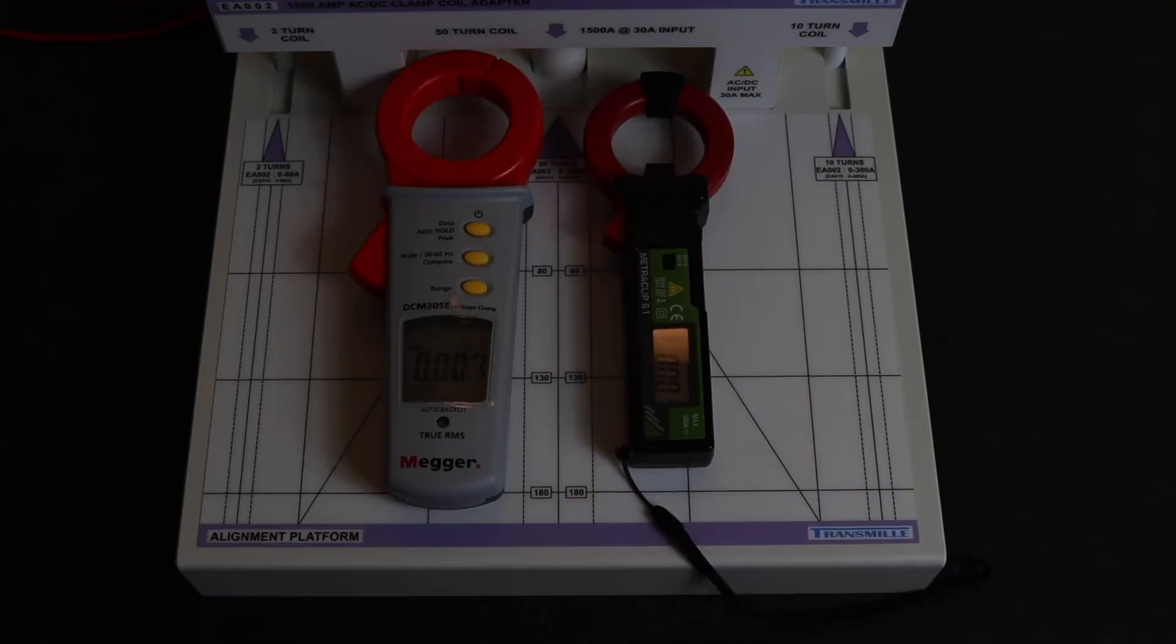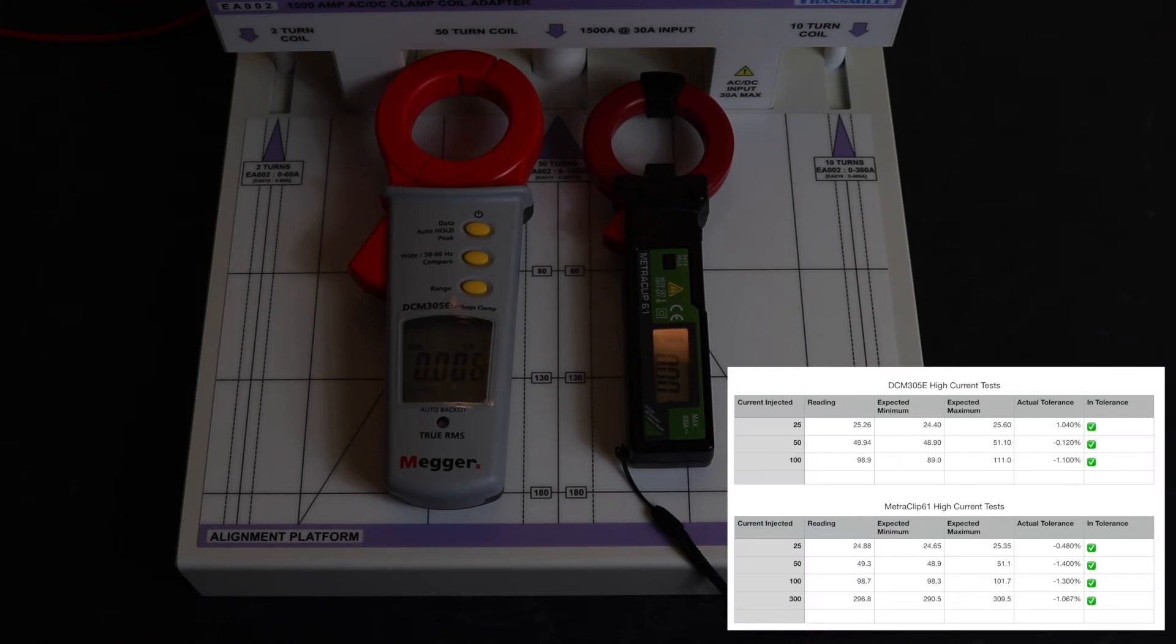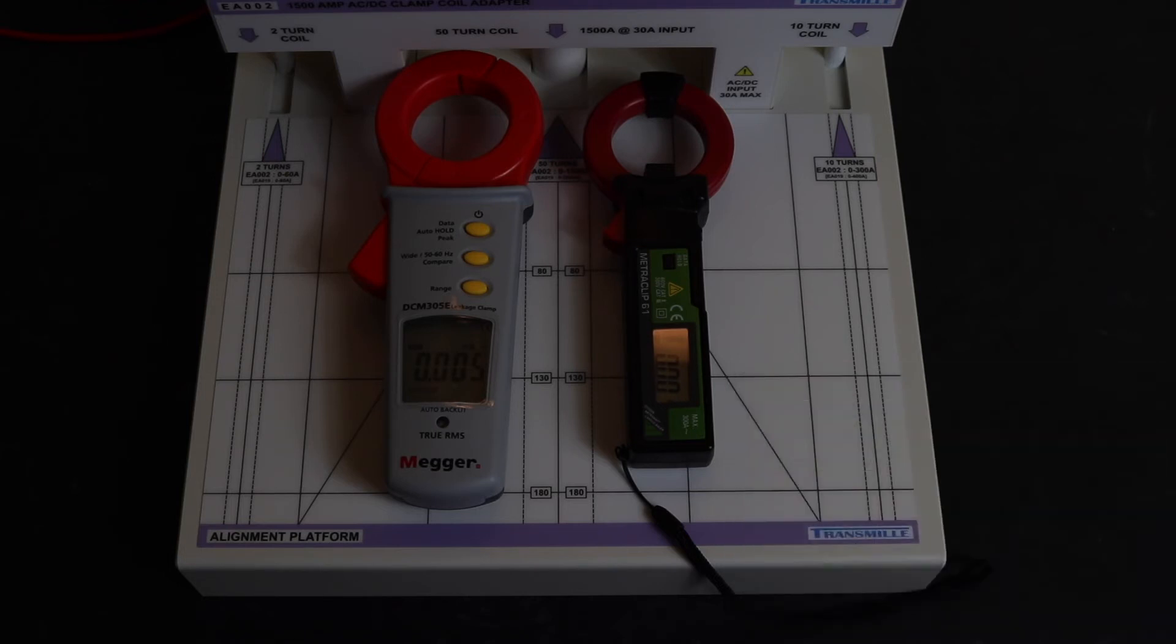Okay so results time for these high current readings that I made with these instruments and the cable clamp. And you can see I've got green ticks all the way down. Both instruments showing themselves to be in tolerance. So yeah quite happy with that test result there. So we'll move on to making some tests at some lower current settings.